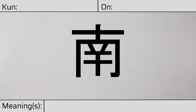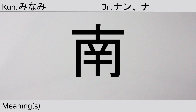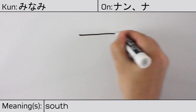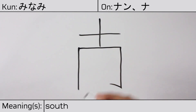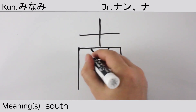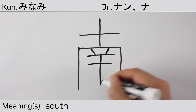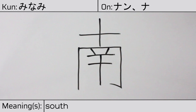Welcome to this lesson on Japanese kanji. Today, we'll be discussing this character. This kanji has kunyomi or Japanese reading of minami, and it has onyomi or Chinese reading of nan or na. This character has the meaning south. Here is the stroke order.